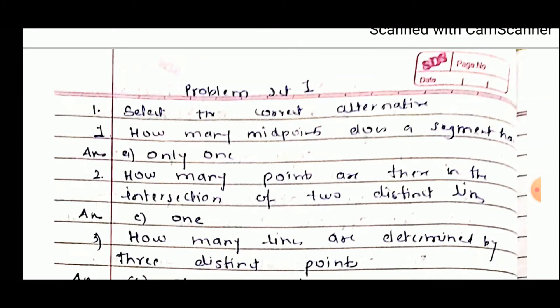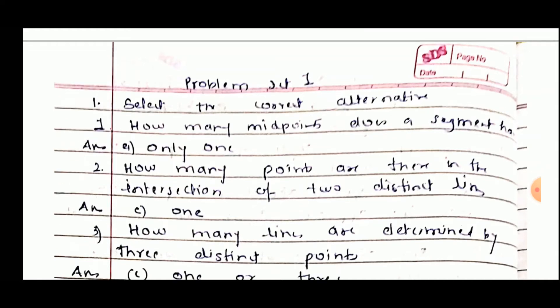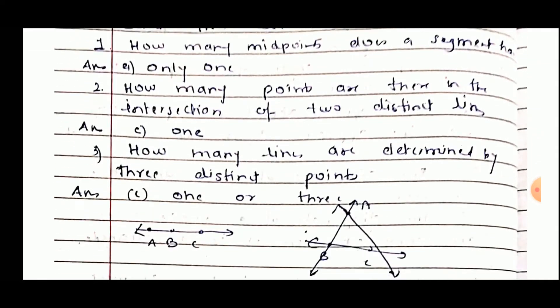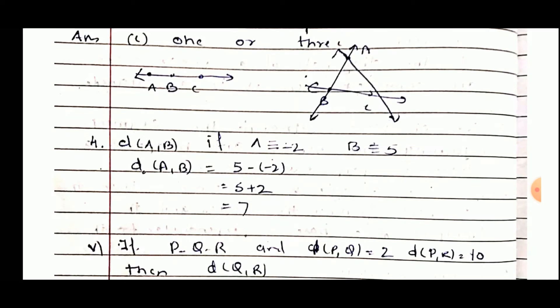Now the problem set 1 — select the correct alternative. How many midpoints does a segment have? Answer: only one. How many points are there in the intersection of two distinct lines? One. How many lines are determined by three distinct points? One or three — if the three points are collinear, you get one line; if they are non-collinear, you can get three lines.